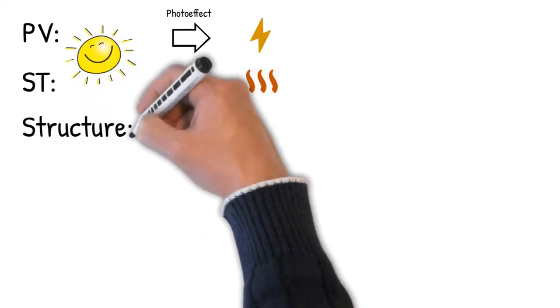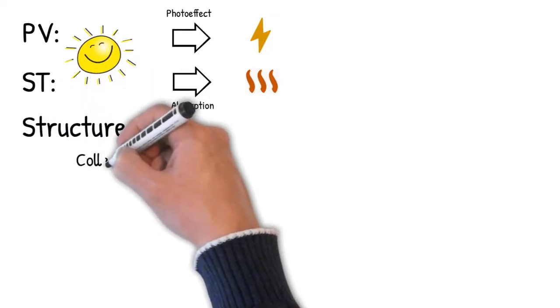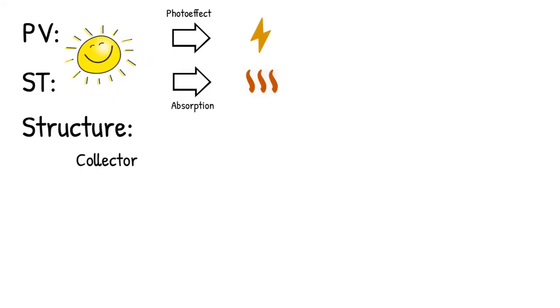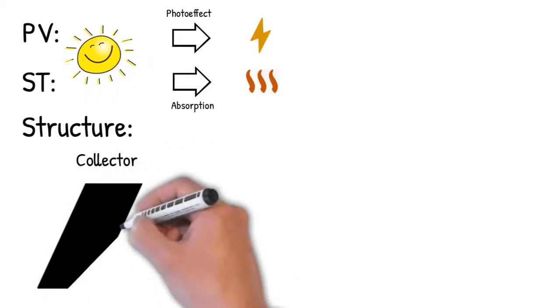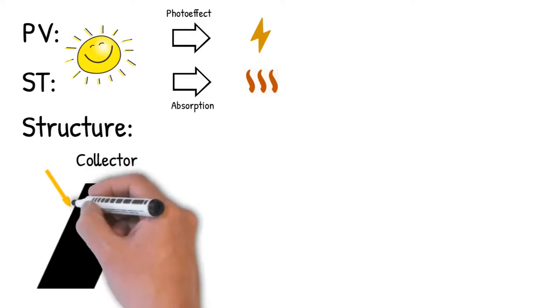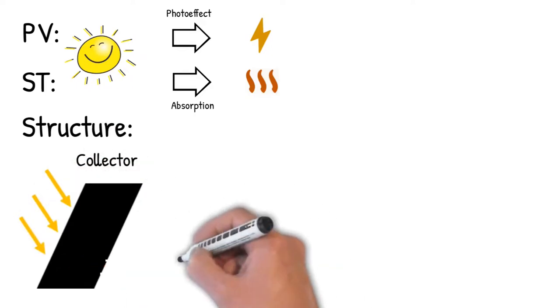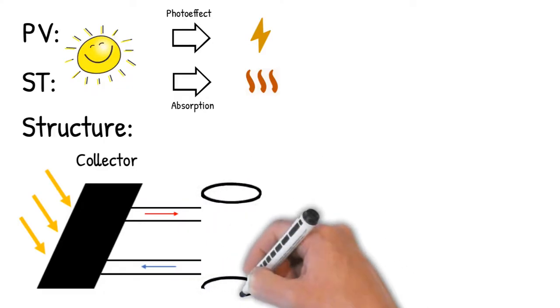In solar thermal systems, this conversion takes place in so-called heat collectors. These are usually black because black solids absorb almost all the light and reflect very little, maximizing the heat yield. A fluid, for example water, flows through the collectors, which absorbs the heat and transports it to a hot water storage tank.